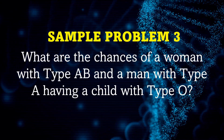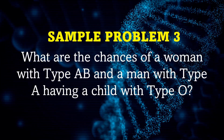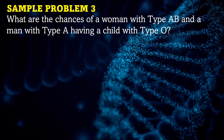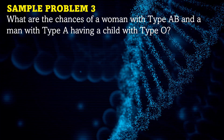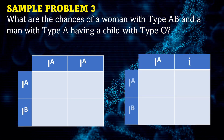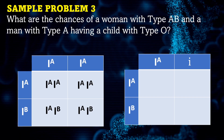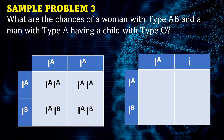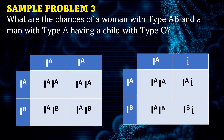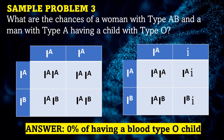Another example: What are the chances of a woman with blood type AB and a man with type A having a child with type O? Since it didn't specify whether blood type A is homozygous or heterozygous, we're going to try both. First, homozygous blood type A combined with blood type AB. Then, heterozygous blood type A combined with blood type AB. As you can see on the Punnett Square, the answer is 0% chance of having a blood type O child.